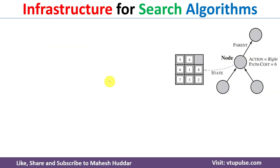Whenever we apply any search algorithm, when we are present at a particular node we need to check whether it is a goal node or not. If it is a goal node, we stop. If it is not a goal node, we need to generate the child nodes by expanding this node with the help of different actions.